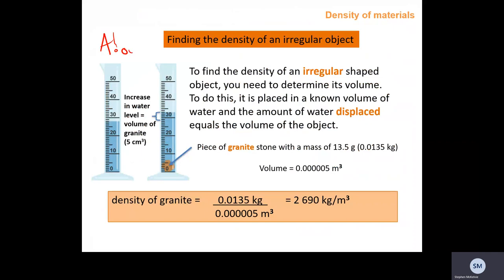To find the density of an irregular shaped object, you need to determine its volume. Place it in a known volume of water — here the volume of water is 28 cm³. The amount of water displaced equals the volume of the object. There's a piece of granite with a mass of 13.5 grams. The water level rises from 28 to 38 cm³, meaning the granite's volume is 5 cm³. To convert to metres cubed, divide by 10⁶ (or multiply by 10⁻⁶).